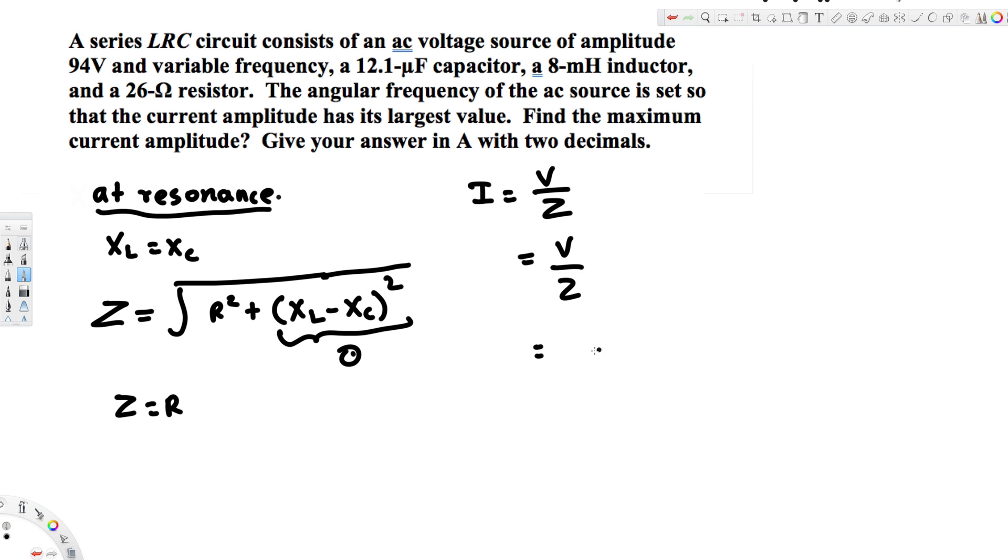Our voltage is 94 volts divided by the resistance, which is 26. If you calculate this, you will get 3.61538. In two decimal places, this is 3.62 amperes, and that's going to be our final answer.